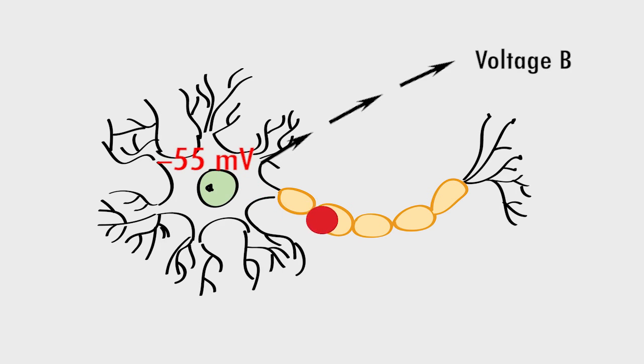So let's run through the process chronologically, from the start of an action potential all the way through the transmission down the axon to its arrival at the axon terminal.